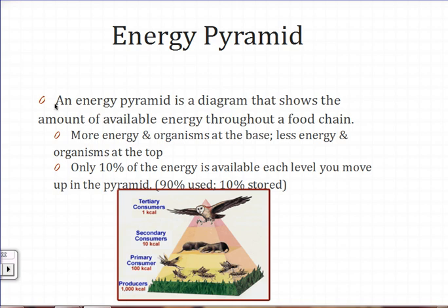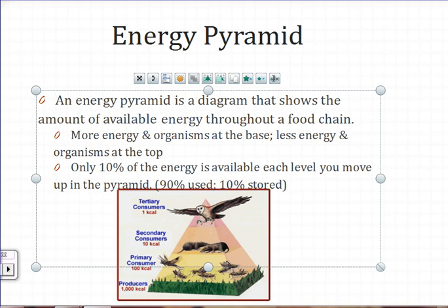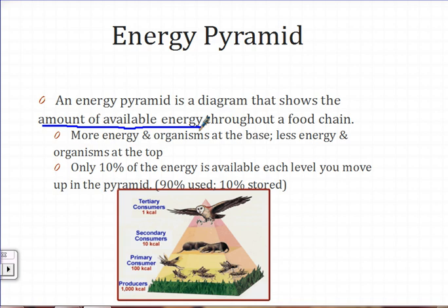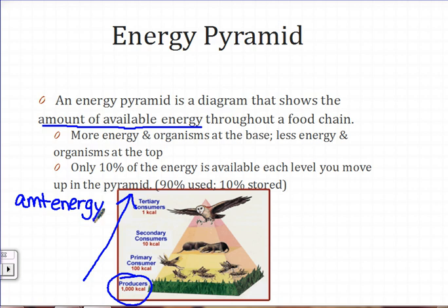An energy pyramid is a diagram that shows the amount of available energy throughout the food chain. There is more energy available at the bottom, so producers are always at the bottom — there are greater numbers of them and a greater amount of energy available. The amount of energy decreases as you move up the pyramid, as does the number of organisms. Only 10% of the energy is available at each level you move up. 90% is used to carry out life processes such as developing, growing, and reproducing. The remaining 10% is saved, stored, and available to the next level.